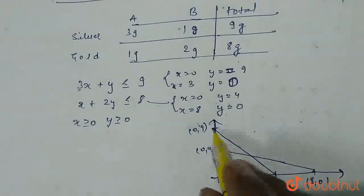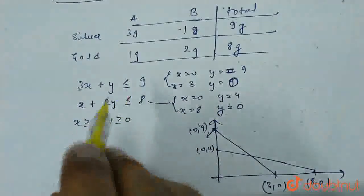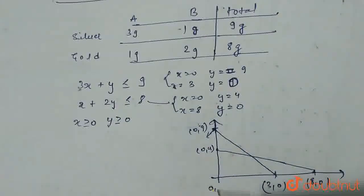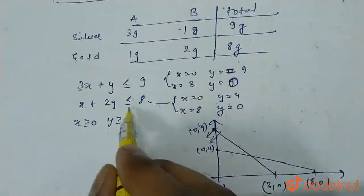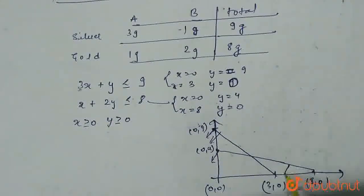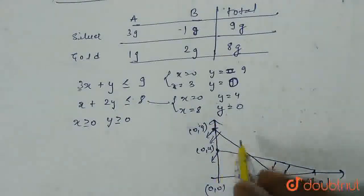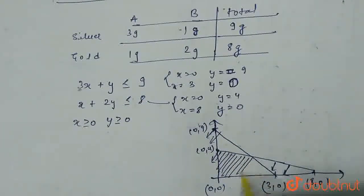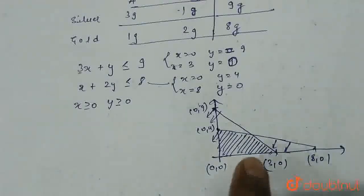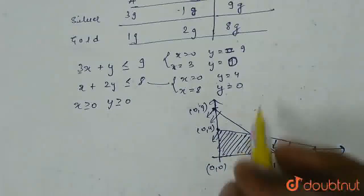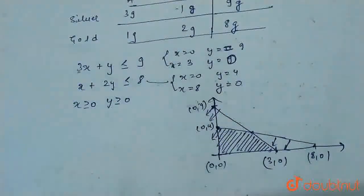We have the two non-negative constraints x equals 0 and y equals 0. Since 3x plus y is less than or equal to 9, and x plus 2y is less than or equal to 8, the shaded region for both lines will be towards the origin. The area bounded by all these lines is our feasible region. The optimal value lies on the corner points: (0, 4), (0, 0), (3, 0), and we need to find the fourth corner point by solving the two equations simultaneously.